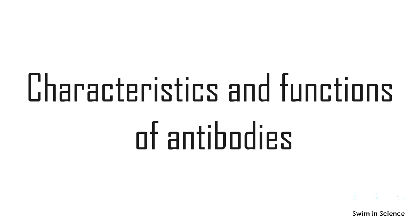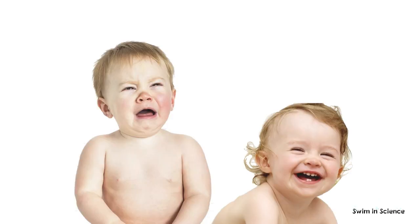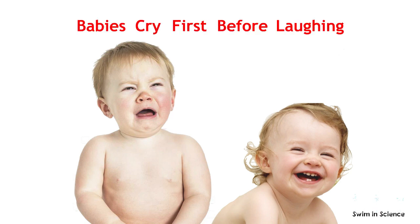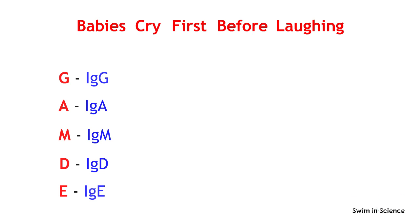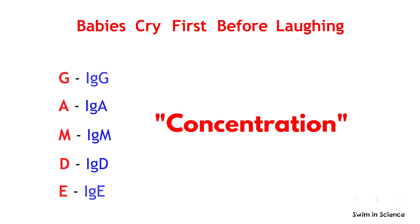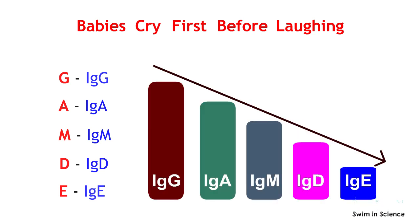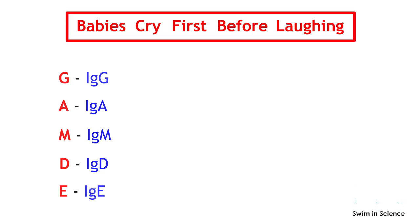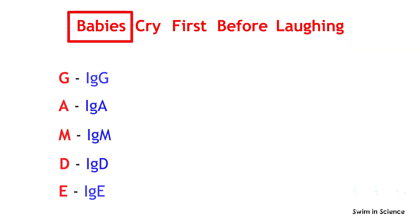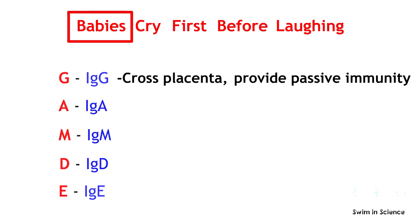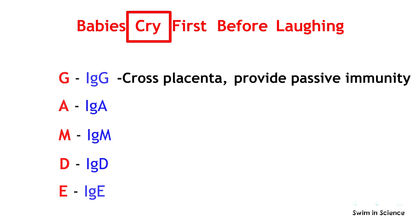Now, to remember the characteristics and functions, let us try in this way. Remember this picture, and the sentence is: "Babies cry first, before laughing." Let us have the antibody types first. Antibody concentration in the serum is one of the most important characteristic features. As told already, IgG is the most abundant antibody followed by others, and IgE is present in very low concentrations in the serum. Moving further, let us link the words in this sentence to antibody types. The first word "babies" indicates that IgG can cross the placenta and transfer from mother to fetus, and provide passive immunity.